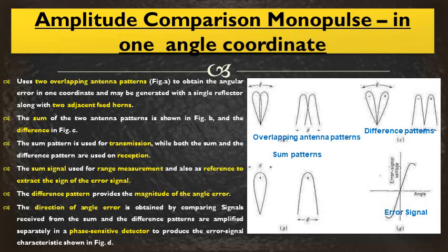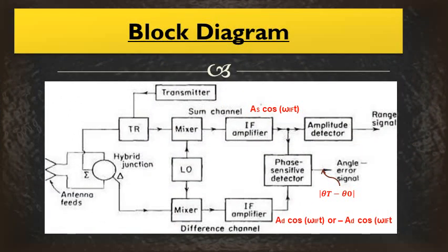How to do that will be explained with a block diagram in the next class. Both the sum pattern and difference pattern are given to the phase sensitive detector — a phase detector — and the error signals are generated by comparing the phase of both signals. The magnitude of the angle error is obtained from the difference pattern alone. Now here is the block diagram: we have a transmitter, a duplexer or TR tube (transmit-receive tube), and all the other components are on the receiver side.